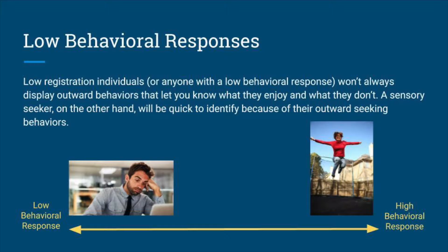Before we jump into describing an individual with low registration, let's first talk about what a low behavioral response looks like in general. Remember that a high and low behavioral response are different. Anyone with a low behavioral response, such as an individual with low registration or someone with a sensory sensitivity, is going to look very different from a sensory seeker or a sensory avoider, which we covered in modules two and three. You may observe a seeker actively trying to find stimulation, while someone with low registration might be sitting at their table and not seeming to need anything. But when presented with extra stimulation, a low registration individual will demonstrate interest and enjoyment.